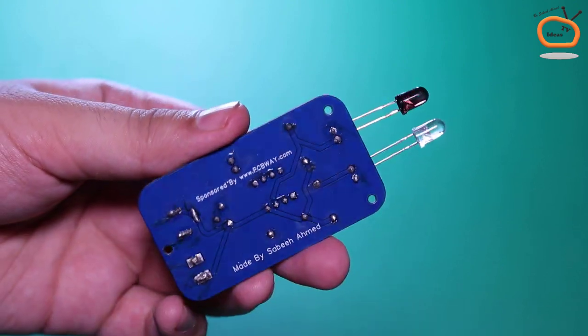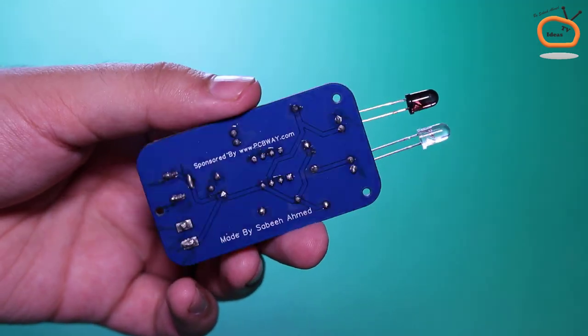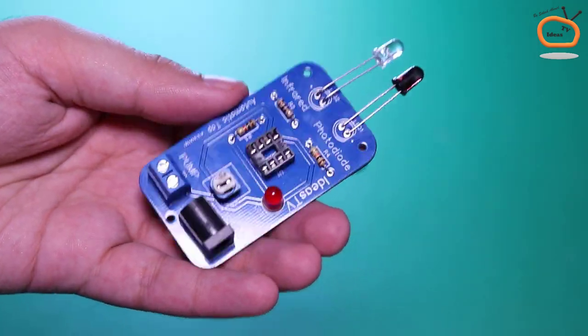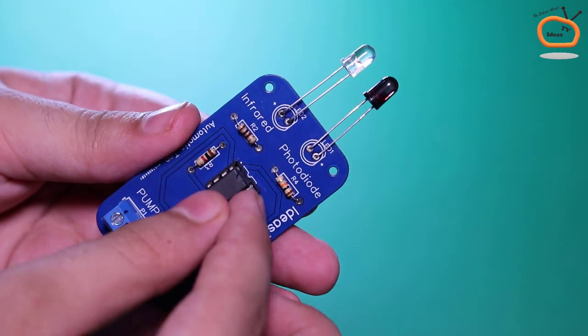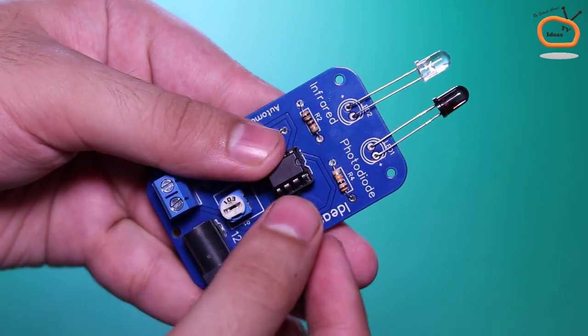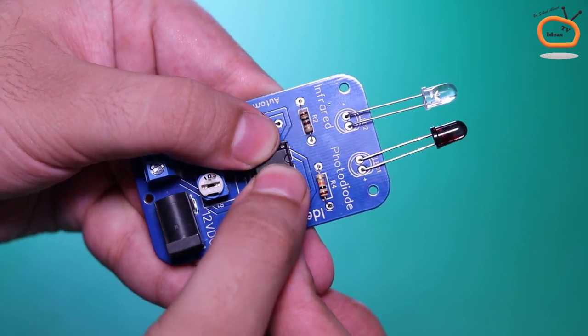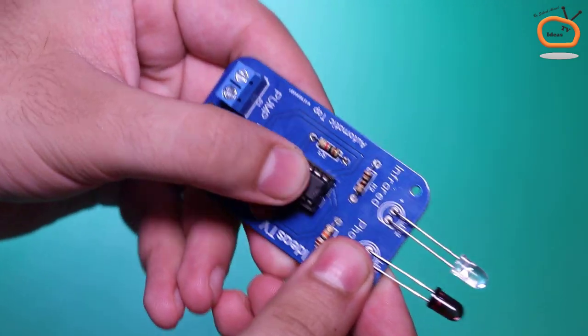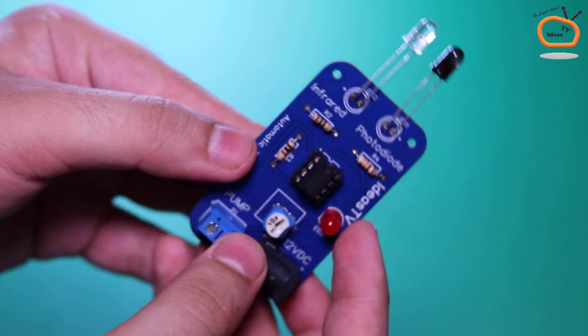Our sensor board is now almost ready. Now I am placing the LM358 IC in the socket. I always prefer to use an IC socket instead of direct soldering, because in case if you burn the IC, you could easily replace another one with it.